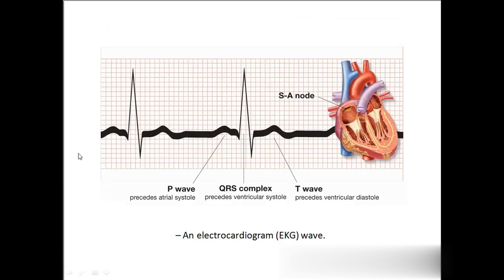What is P? P is atrial systole — the contraction of the atrium. And the QRS complex is ventricular systole. The atrium is very small, so it gets only a smaller wave. The ventricles are very large, so the QRS complex is bigger.